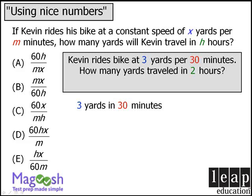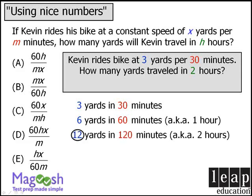If Kevin travels 3 yards in 30 minutes, then in 60 minutes, i.e. 1 hour, he can travel 6 yards. And if he can travel 6 yards in 60 minutes, we know that he can travel 12 yards in 120 minutes. So, the answer to the question we've created is 12 yards.